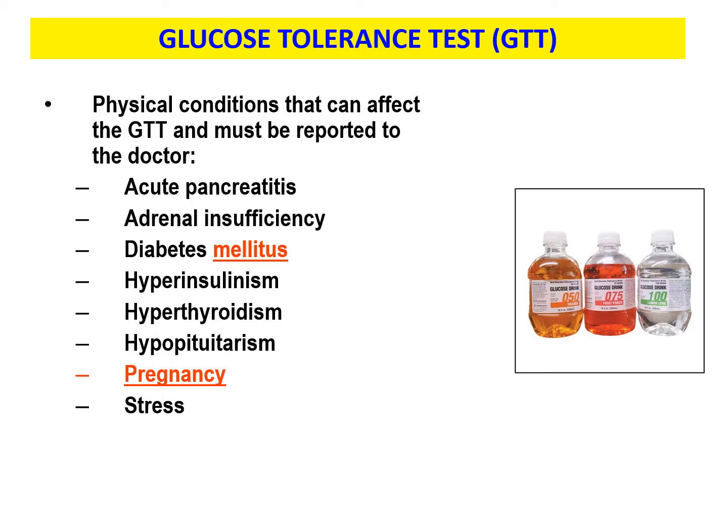Certain physical conditions can affect the GTT and must be reported to the doctor: acute pancreatitis, adrenal insufficiency, pre-existing diagnosis of diabetes mellitus, and others. If the patient tells you they have any of these conditions, note them in case your physician doesn't already know. Be aware of anything from acute pancreatitis all the way down to pregnancy and stress. If you're doing this to diagnose gestational diabetes, the patient has likely been ordered by their OB and everyone knows they're pregnant.